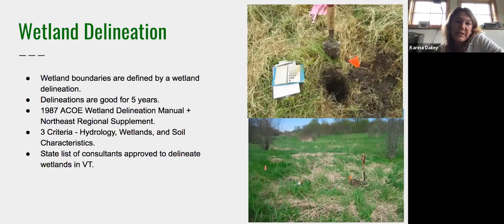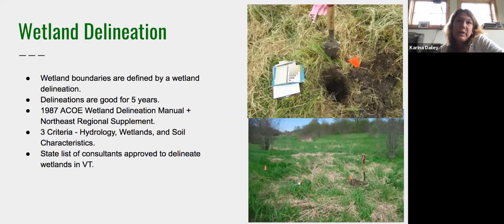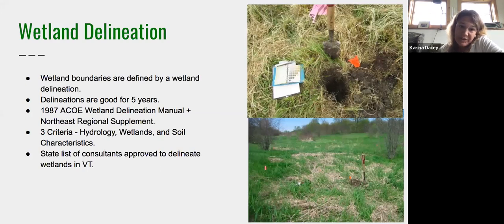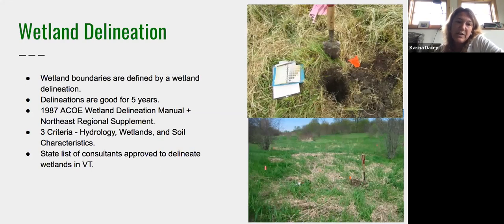Wetland delineations define the boundaries of a wetland and are necessary when a property is changing hands and development or conservation is proposed. Delineations are good for five years only, because of the dynamic nature of wetlands — they change over time as hydrologic regimes change, areas dry up or get wetter, and vegetation changes with climate change. They are based on the Army Corps of Engineers Wetland Delineation Manual from 1987.